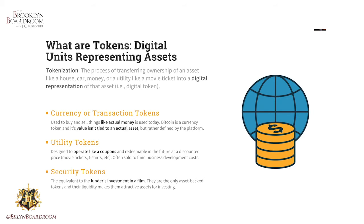That particular token would be considered a security token, because it's backed by an actual physical asset. Unlike a utility token — say you own a movie theater and want family and friends to come for free on Friday nights — that token would operate like a coupon, redeemable for access to your movie theater on Friday nights. The utility token is not backed by an actual asset; it has zero foundation in an asset and is purely utilitarian.